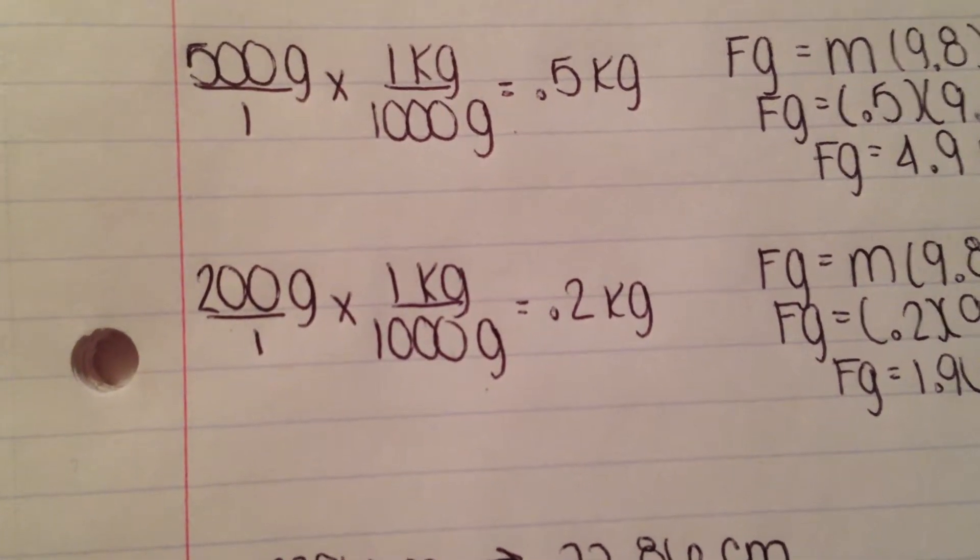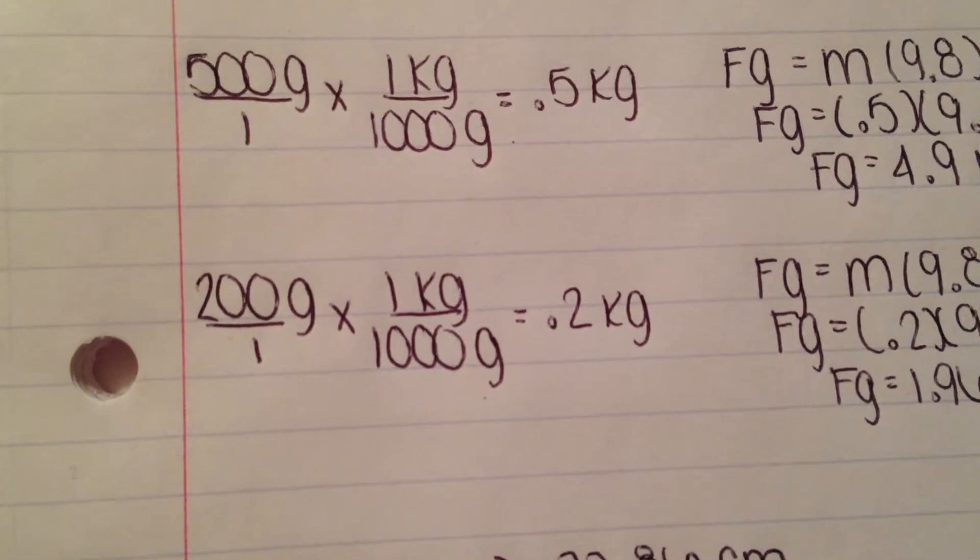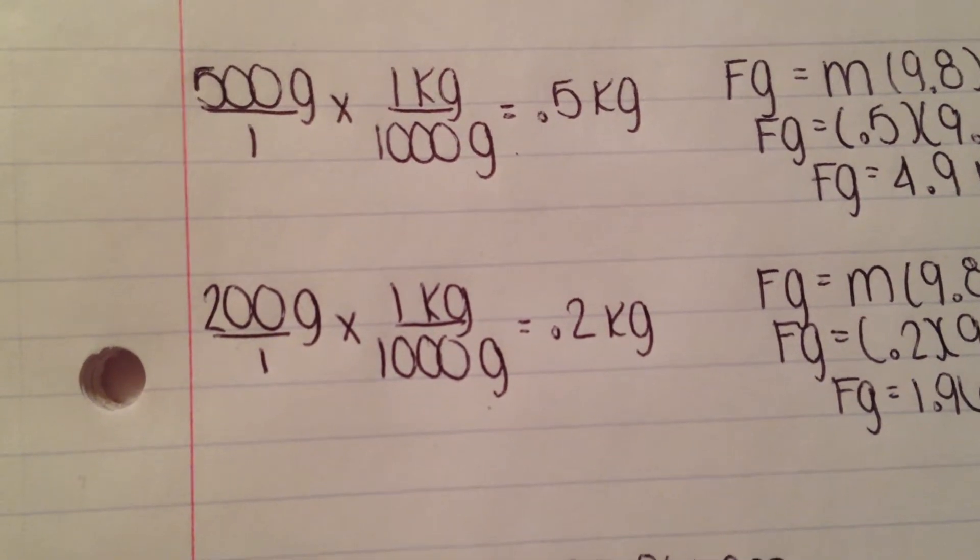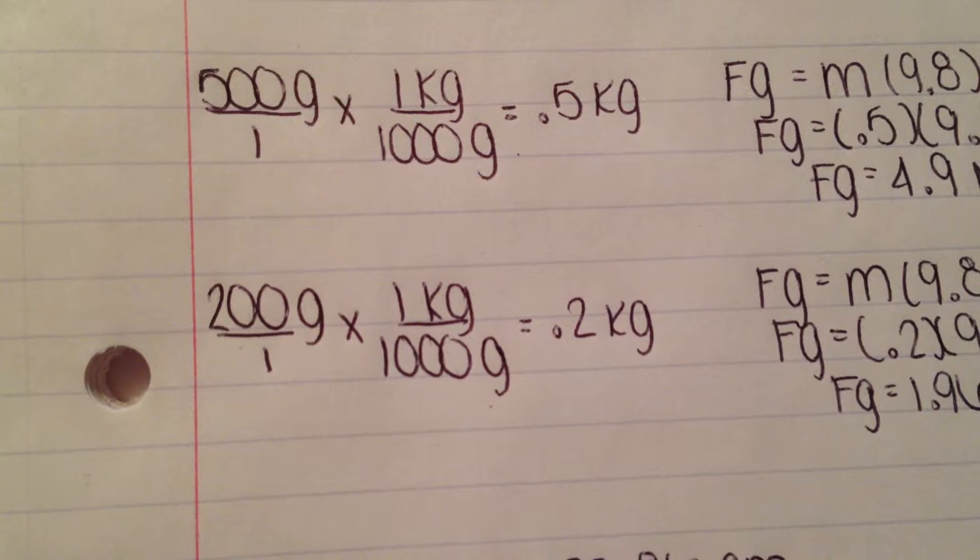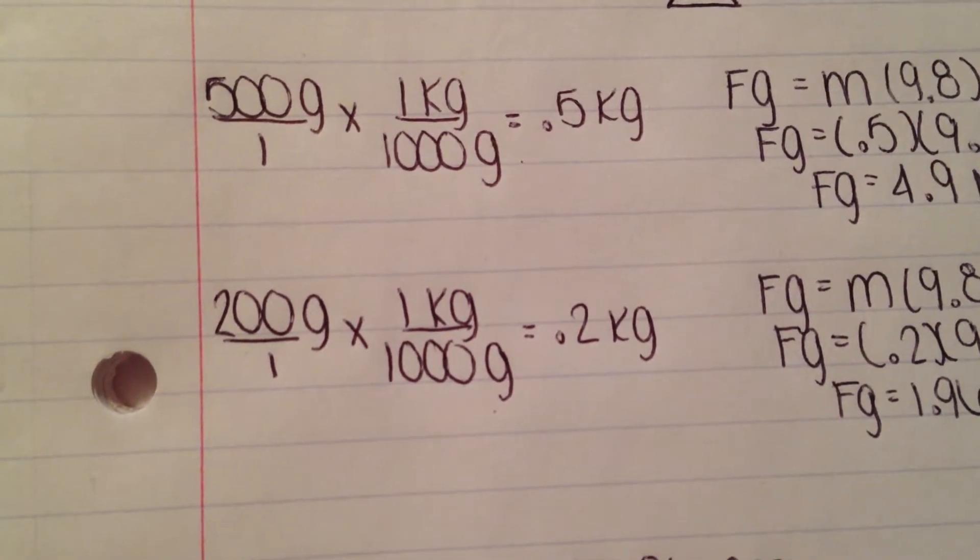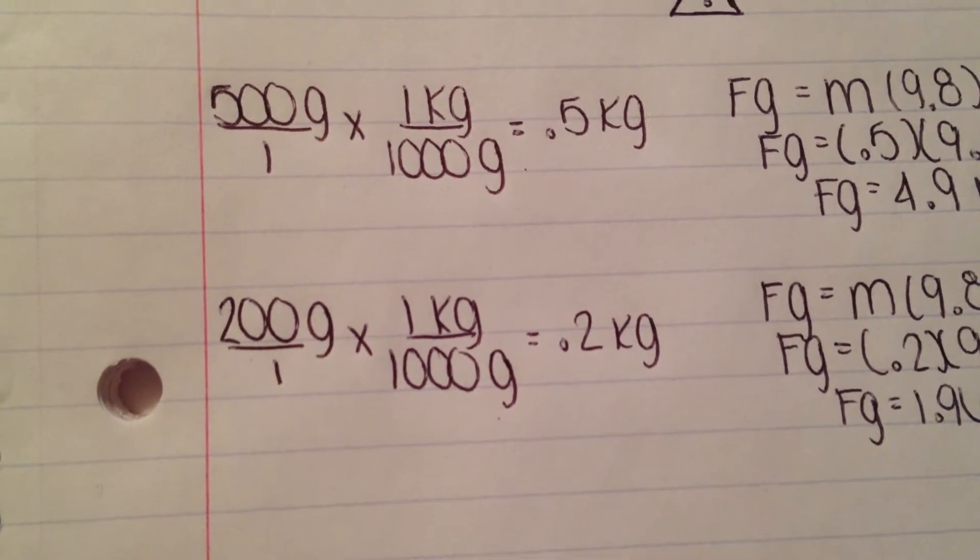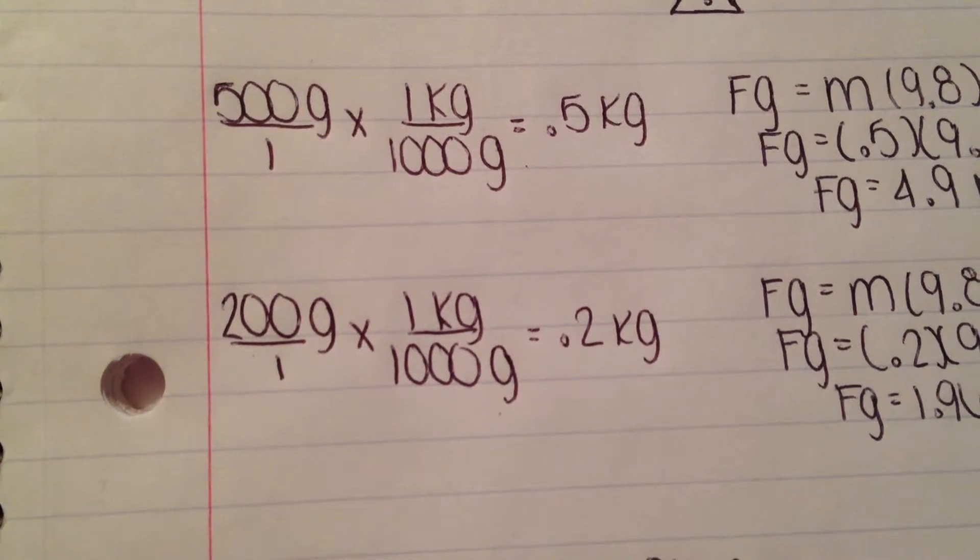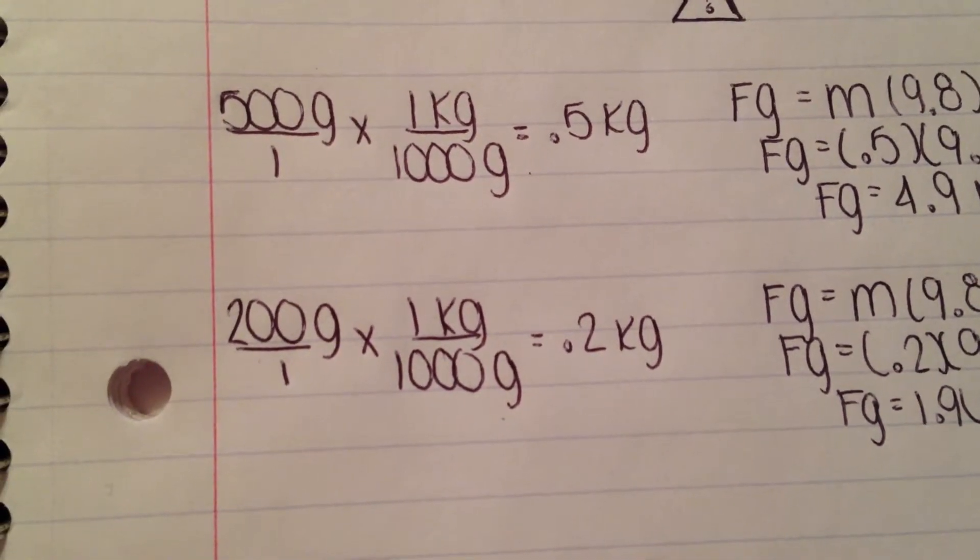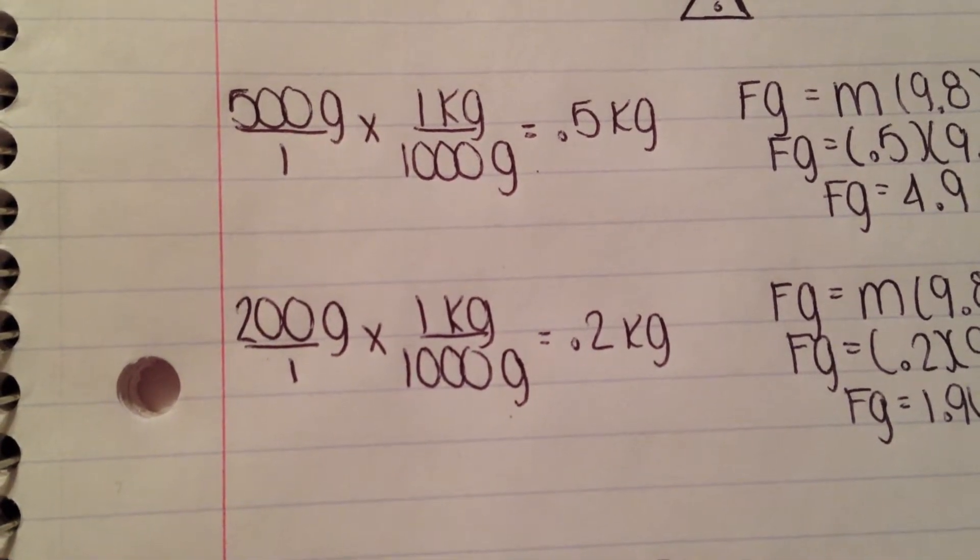Now, we have to work on the other side of the problem for the 200 gram mass. Since we already figured out earlier that the radius we need to use is 0.8 minus x, we need to find the force for the 200 gram mass. So, we do the same thing as the 500 gram mass. Convert 200 grams into kilograms, which will be 0.2 kilograms.